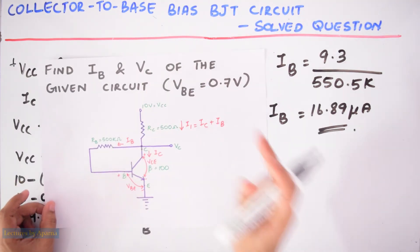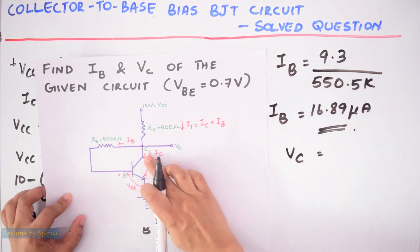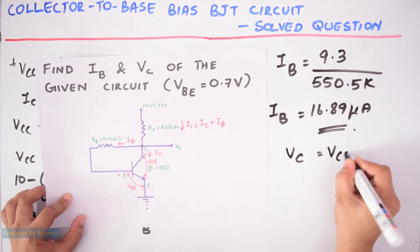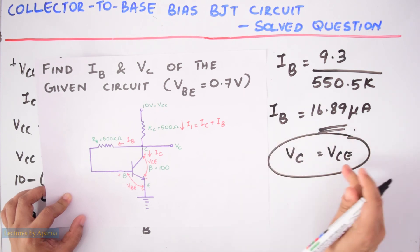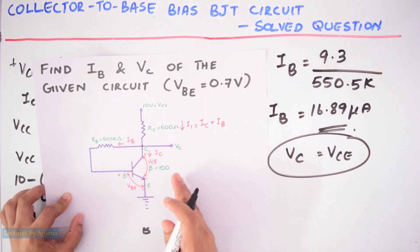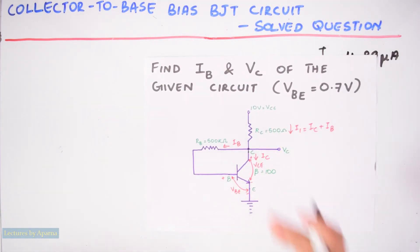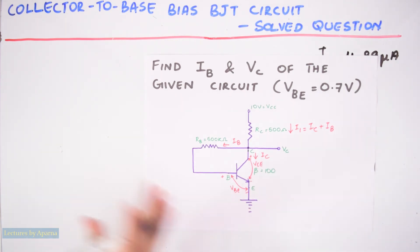Now we have to find VC. Here VC is equal to this voltage VCE. So if we find VCE, we will get VC. So we are considering the output section now.